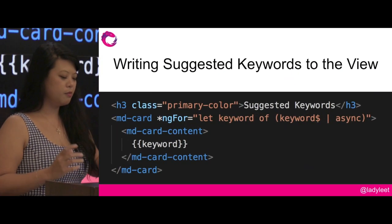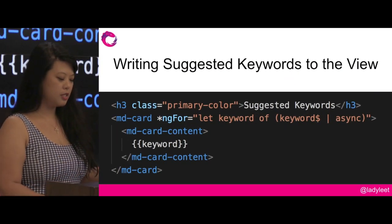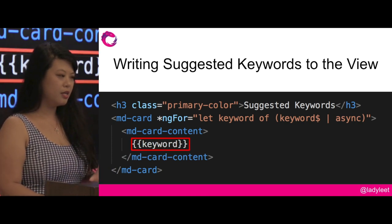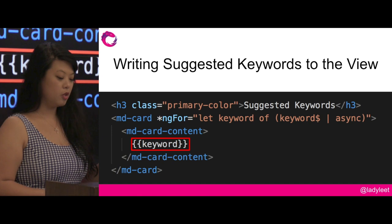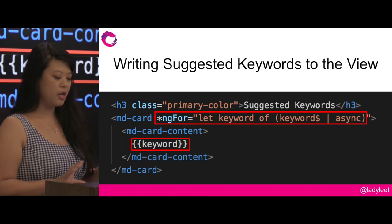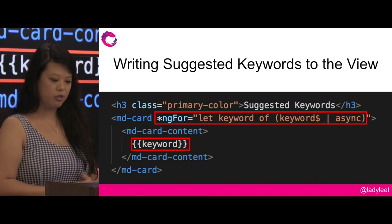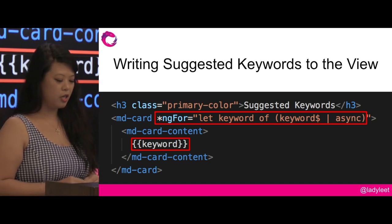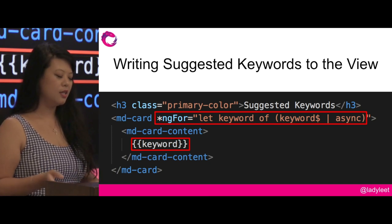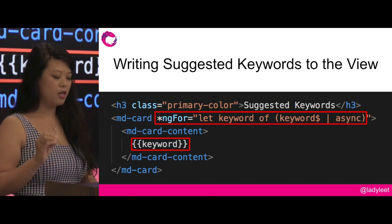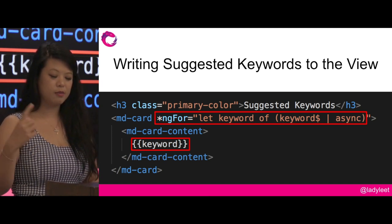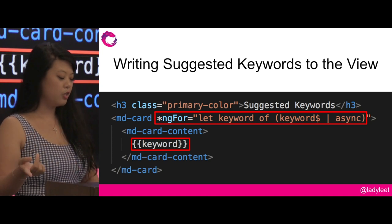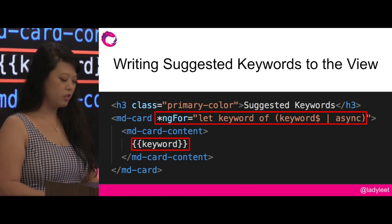Now that we have this observable of suggested keywords, we need to write it out to the view. Because keywords is an observable of arrays, we can use pipe async and then iterate over it using ngFor. Pipe async is one of my favorite Angular features — when the component initializes, it subscribes to that observable, and immediately after it's removed from the view, it unsubscribes. That's really powerful.